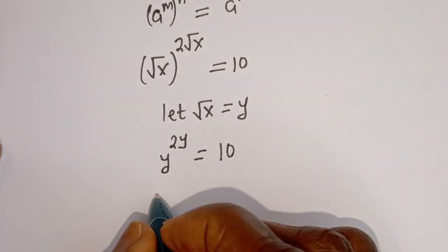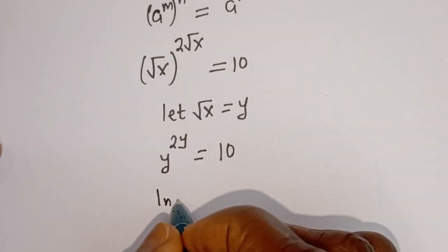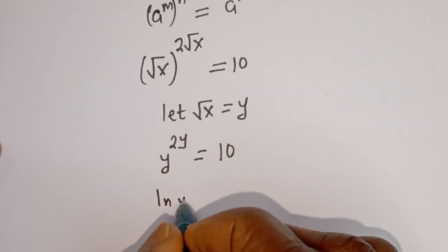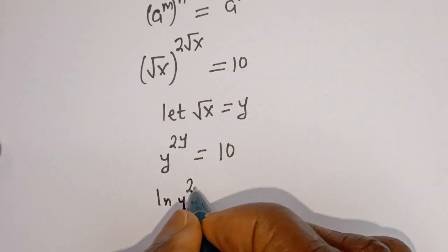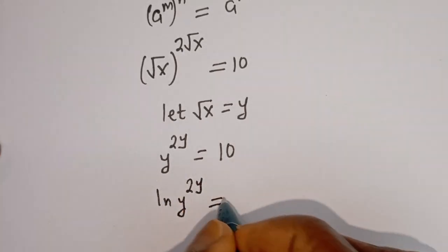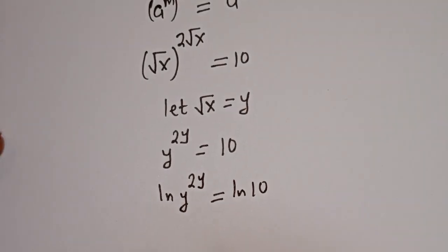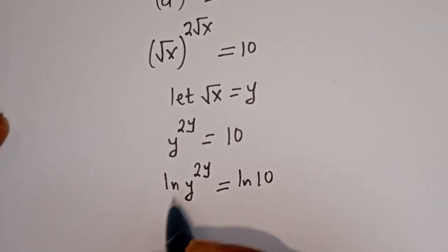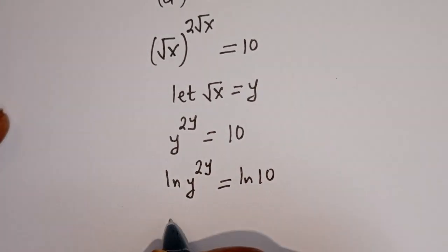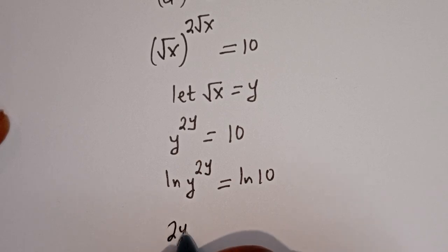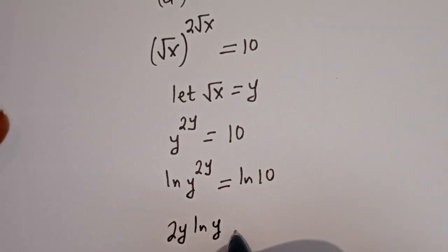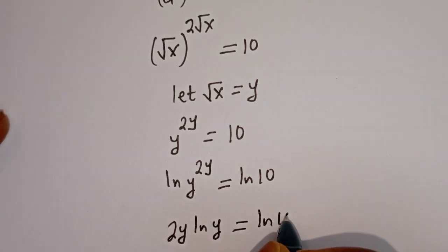Then let's take the natural log of both sides. We have ln(Y^(2Y)) is equal to ln(10). This can be written as 2Y·ln(Y) is equal to ln(10).